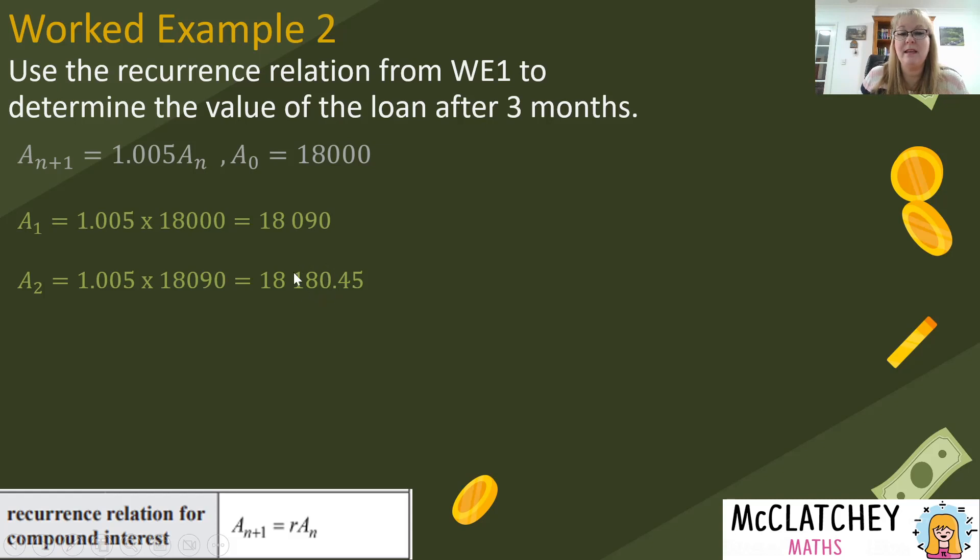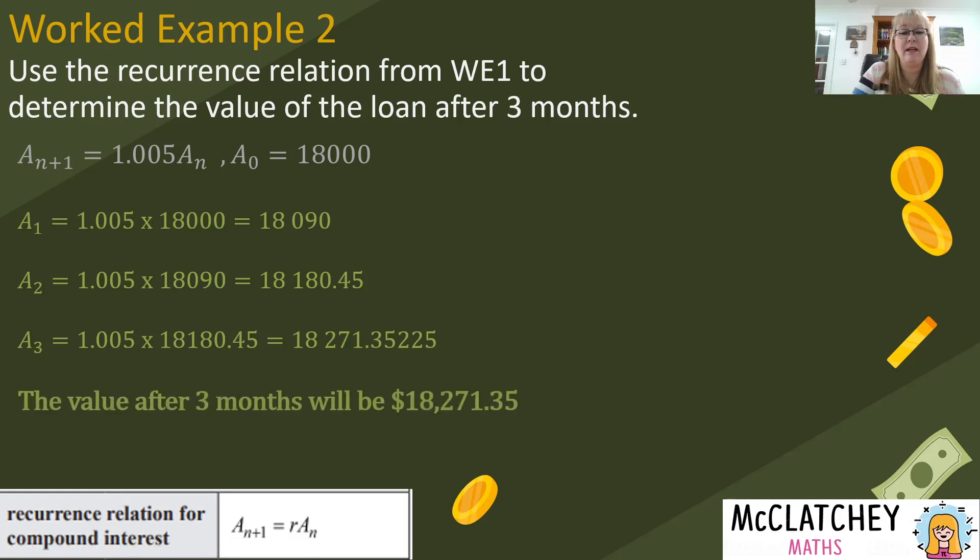Now we're going to do the same process again, this number here will drop down into the recurrence relation for the third month so up here we're going up in ones so now this was a subscript 0, a subscript 1 pops down there, a subscript 2 pops down here and now we've got this number here. Now the reason why I've written with five decimal places is because I'm actually going to write a statement at the end because I've been asked to do something in words, to determine. So the value of the loan after three months will be $18,271.35. Always remember when you're presenting money that you round off to two decimal places.